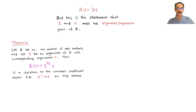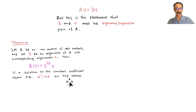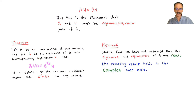Let A be an n×n matrix of real constants and let lambda be an eigenvalue of A with corresponding eigenvector v. Then x(t) = e^(λt)v is a solution to the constant-coefficient vector differential equation x' = Ax on any interval. Note: we have not assumed that the eigenvalues and eigenvectors are real — this result holds in the complex case also.